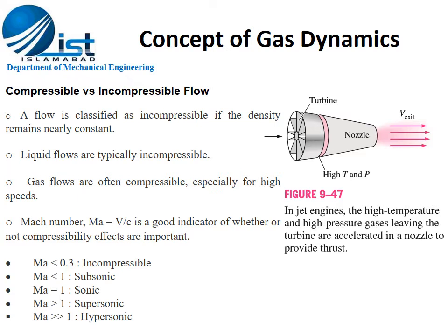The Mach number, which is the ratio of the velocity of the object to the velocity of sound, is a very good indicator of whether the flow is compressible or incompressible.